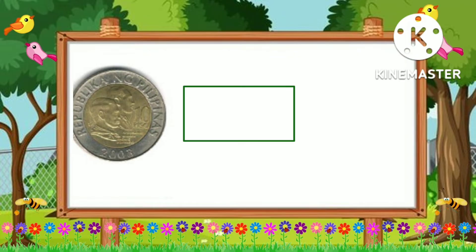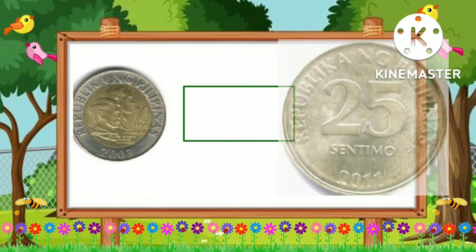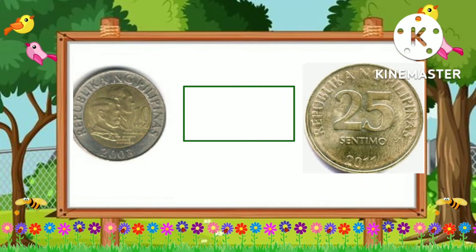The second example is: I have here a ten peso coin and 25 centavos. Ten pesos is greater than 25 centavos.